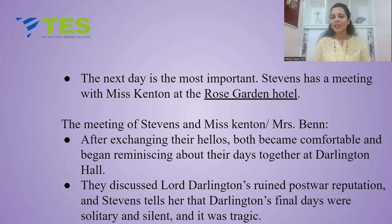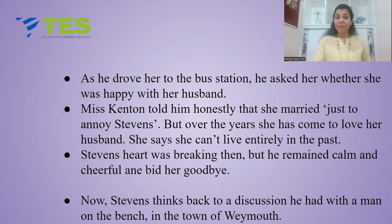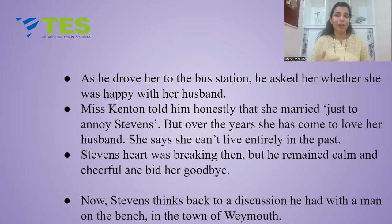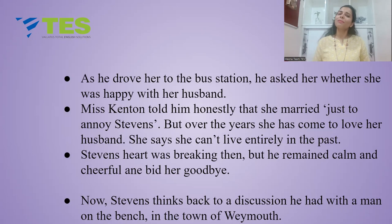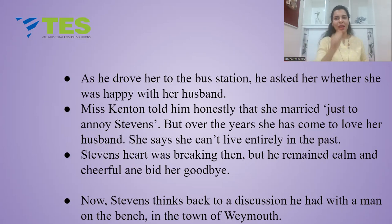They discussed Lord Darlington's ruined post-war reputation. Stevens tells her that Lord Darlington's final days were solitary and silent, and it was tragic. After talking and eating together, he drove her to the bus station. He got the courage to ask her whether she was happy with her husband. To this, Miss Kenton — now Mrs. Ben — replied honestly: she said that she married just to annoy Stevens, she did not want to marry, but she wanted to annoy him, and that is why she got married.